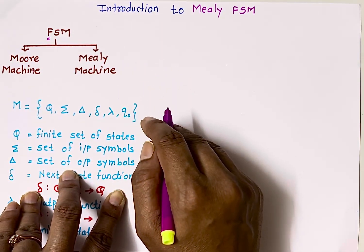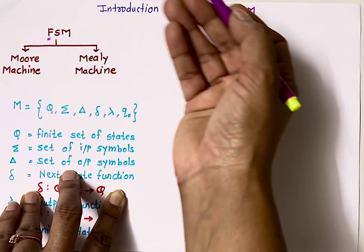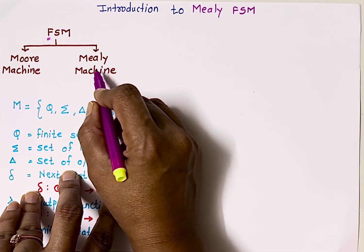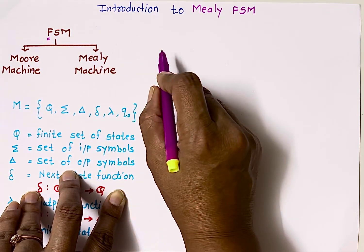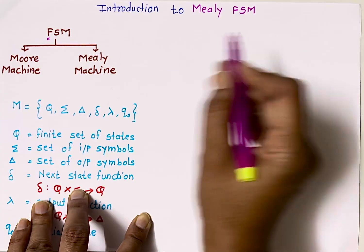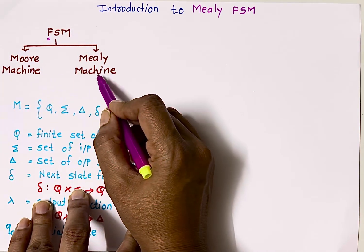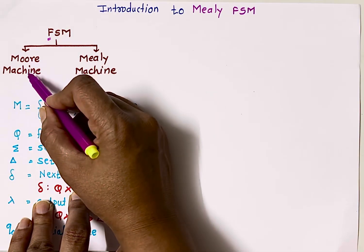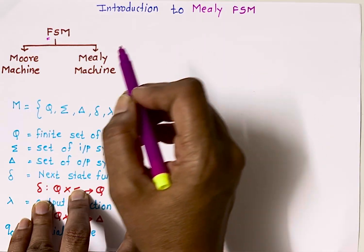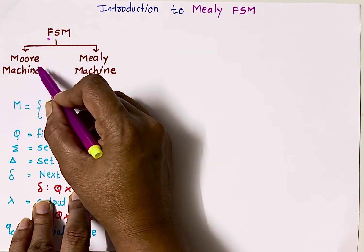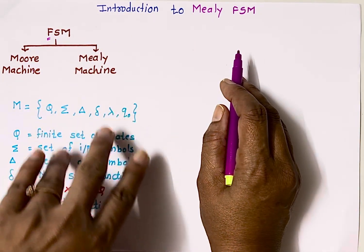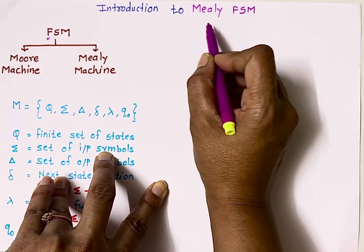The basic difference between the two is: in the Mealy machine, output depends on the present state of flip-flops as well as what current external input is being applied. So input and present state of flip-flops are equally important. As soon as input changes, output changes — it will not wait for the clock, which is why we call Mealy asynchronous. In Moore machine, output depends only on the present state of flip-flops; even if external input changes, the output will not change until the clock arrives.